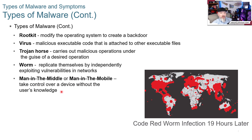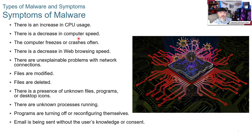The man-in-the-middle or man-in-the-mobile attack involves someone getting between you and a system, making themselves look like part of it, and tracking or decrypting your information. If data is sent unencrypted across a network with someone in the middle, they can intercept it. Symptoms of malware include increased CPU usage, decreased computer speed, freezing or crashes, decreased web browsing speed, unexplained network connection problems, modified or missing files, files being encrypted, presence of unknown files or programs, unknown processes running, programs reinstalling themselves after removal, or emails sent without the user's knowledge.